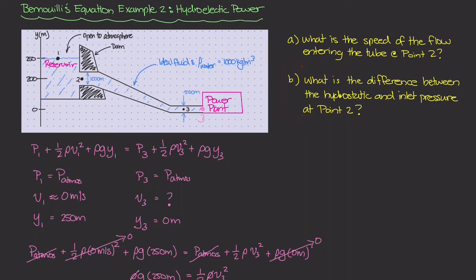This is going to be a very interesting question because it's asking: what is the difference between the hydrostatic pressure and the inlet pressure at point two? So at point two, there are actually two pressures we're looking at — our regular P2, and also the static pressure there.